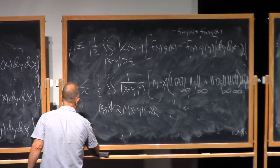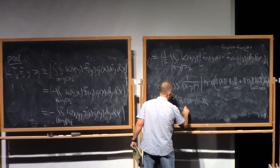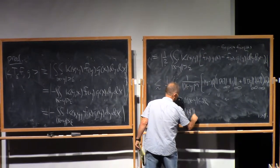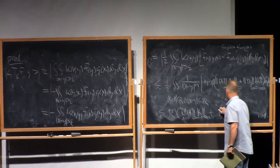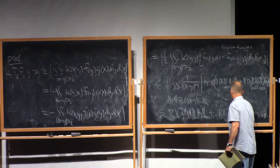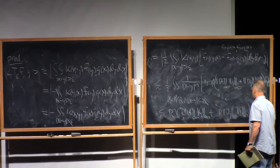So this is less than or equal to r to the n times r times grad f infinity g infinity plus the same thing with the roles of f and g interchanged. And that's weak-boundedness.